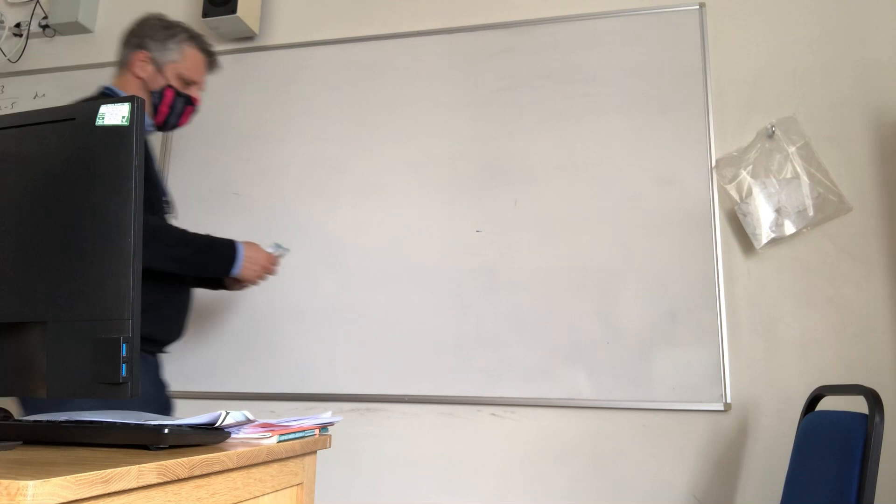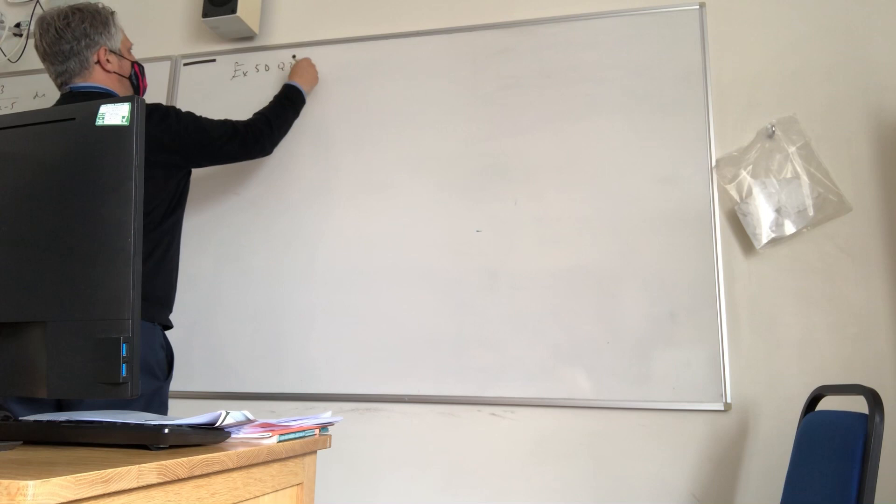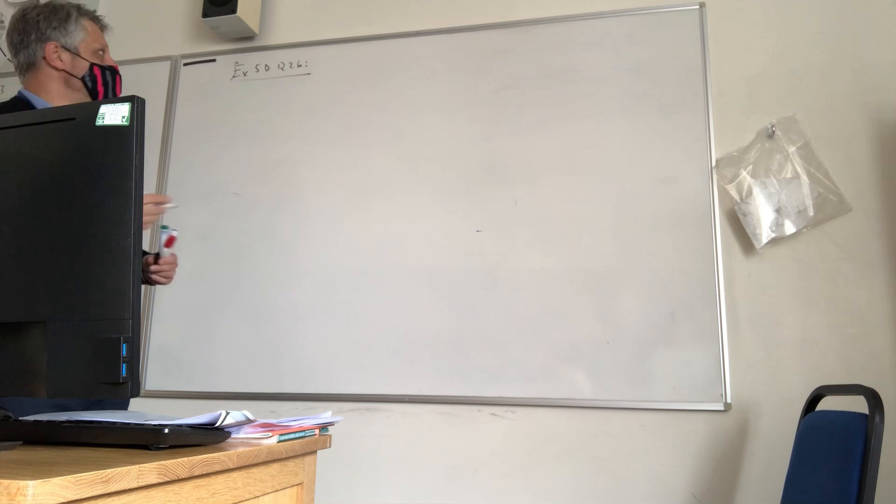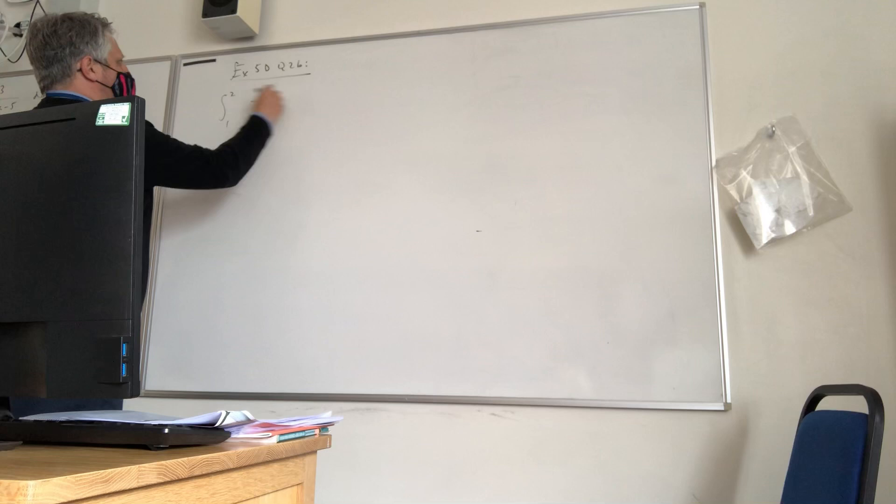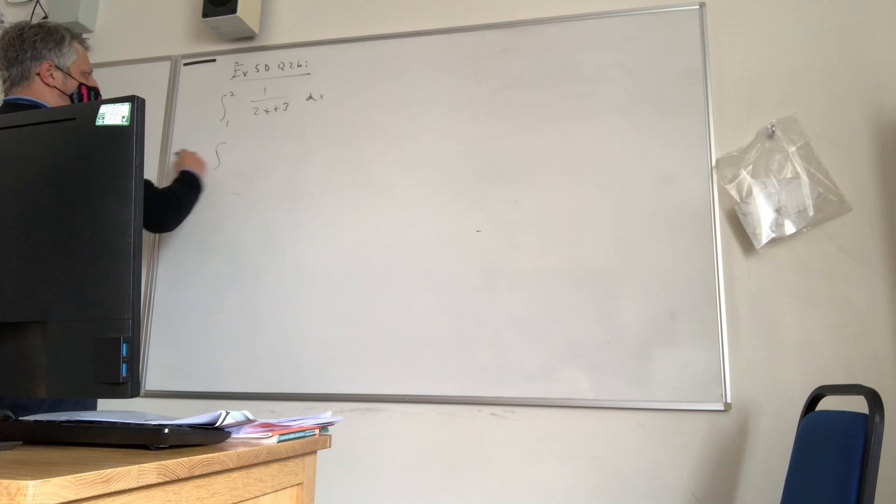The question we're looking at is a definite integral this time. This is from 5d question 2b. Exercise 5d question 2b. The question is, the integral between 1 and 2 of 1/(2x + 3). We know we're dealing with something with 1/(ax + b) where the power is 1. So there will be a log answer. I'll worry about the 2 and the 1 later.